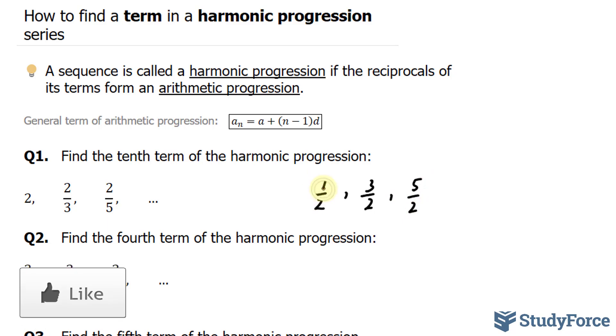The first term here is 1 over 2, and we'll call that a. So the first term is denoted as a. And there's a common difference amongst these three terms of 1. Take a look. 3 over 2 minus 1 over 2 is equal to 1. And similarly, 5 over 2 minus 3 over 2 is equal to 1. So this difference we'll denote as d.